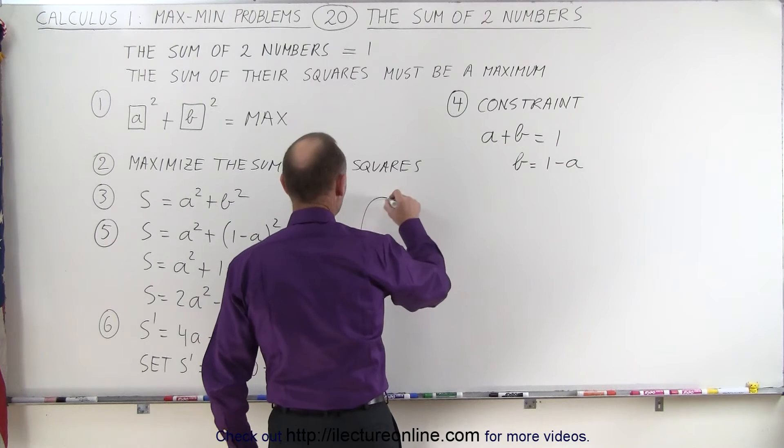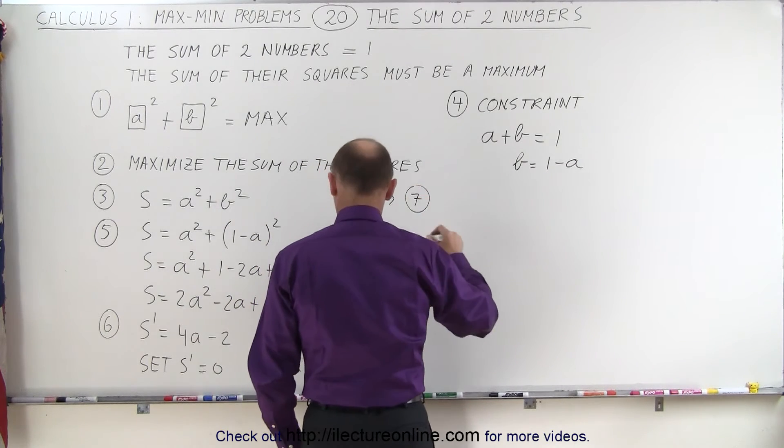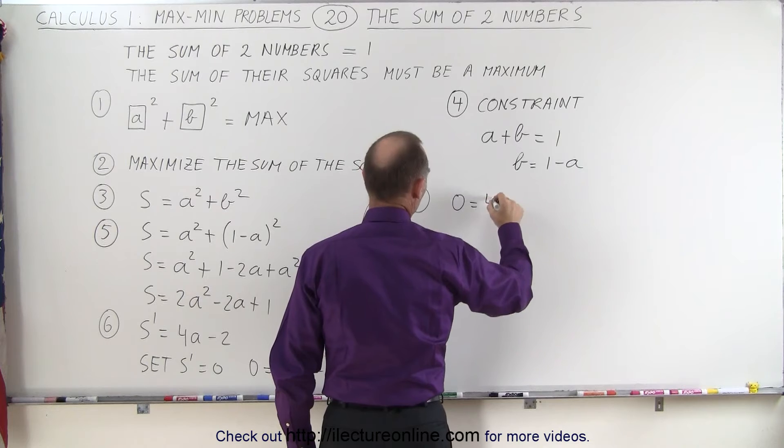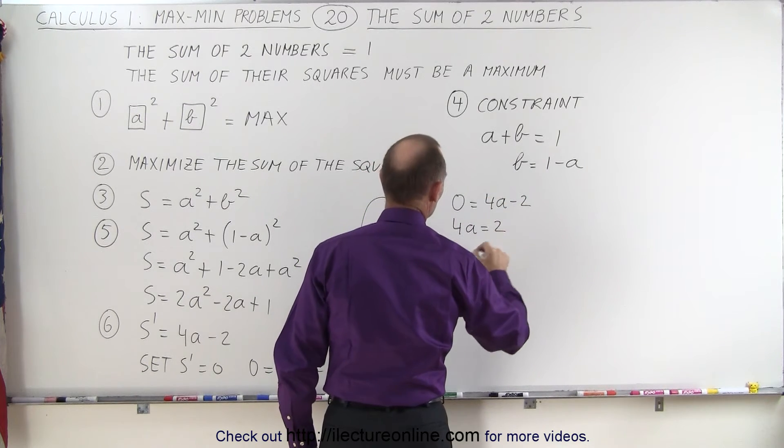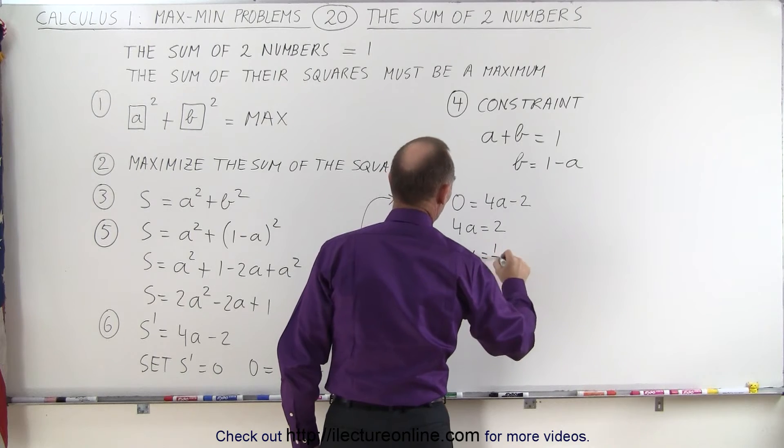Let's add step number 7. So we get 0 is equal to 4A minus 2. 4A equals 2. Therefore, A equals 1 half.